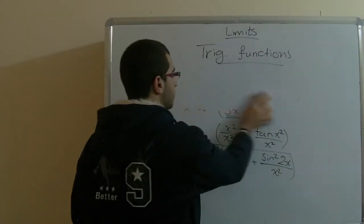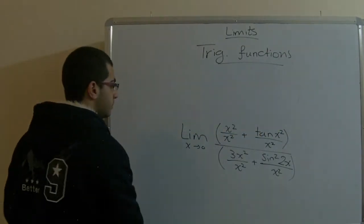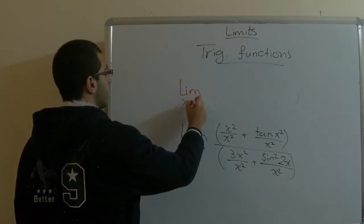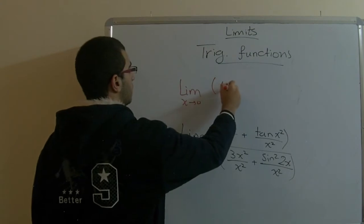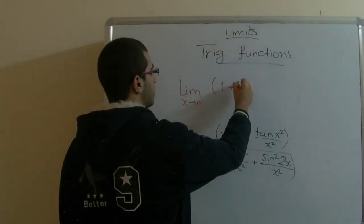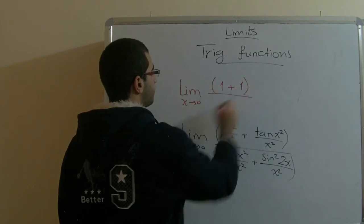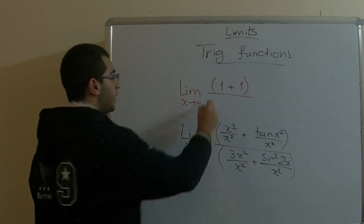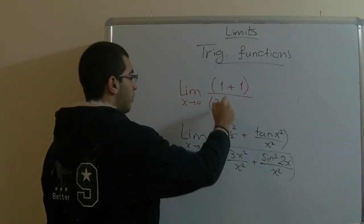So, we read this. We have the limit of x approaching zero. Here we have 1 plus tan x to power 2 over x to power 2 gives us 1 also. In the denominator, we have 3 x to power 2 over x to power 2 to get 3 plus.